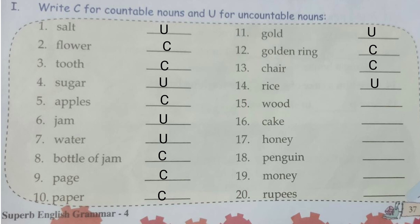We use a specific word to count rice. Wood — uncountable. Cake — countable. Honey — uncountable. Penguin — countable, yes, we can count penguins. Money — countable, of course. Rupees — yes, we can count rupees.